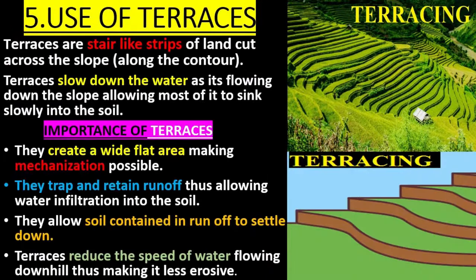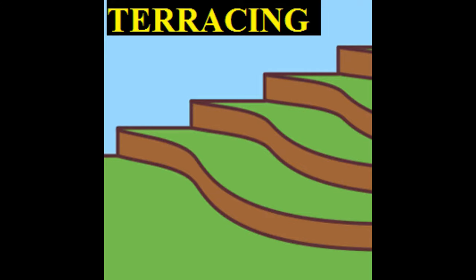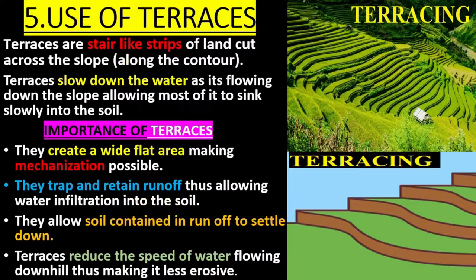Use of terraces. Terraces are stair-like strips of land cut across the slope along the contour. Terraces slow down the water as it flows down the slope, allowing most of it to sink slowly into the soil.